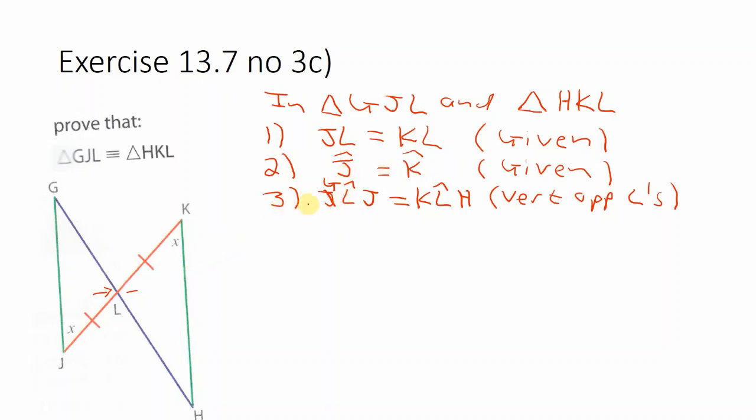And now we see, just before we go there, you can see L and L was in the same position here. That's why we know this one is correct. And now we see we have an angle, a side and an angle. So in conclusion we can therefore say triangle GJL is congruent to triangle HKL.